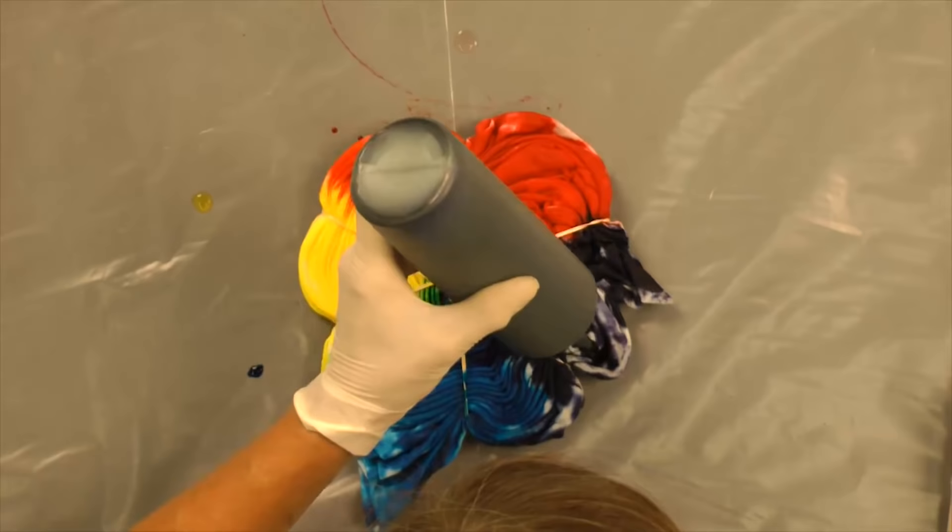Okay, and there's the rainbow spiral. Now it needs to sit for about 24 hours before we can wash it out. Okay.